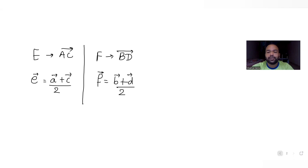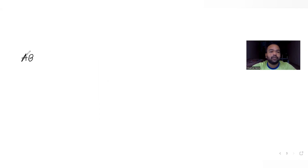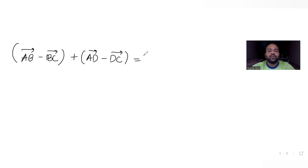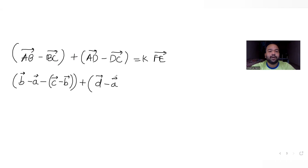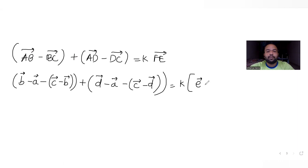Now let's understand the equation given. The equation tells us vector AB minus vector BC plus vector AD minus vector DC equals K times vector FE. Vector AB can be written as B bar minus A bar, and vector BC becomes C bar minus B bar. This equals K times (E bar minus F bar).